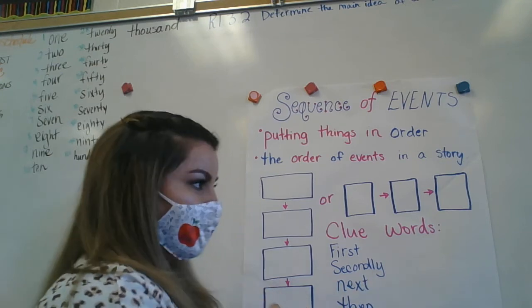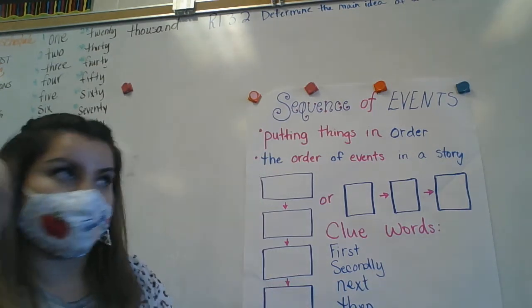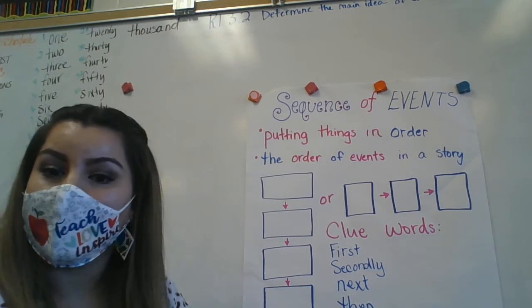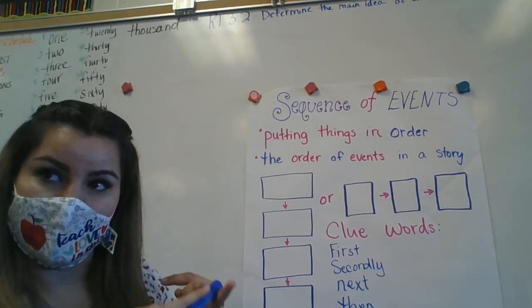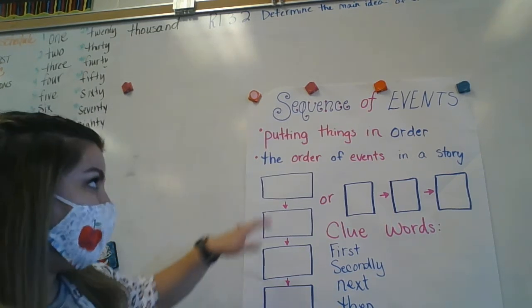Then, okay, so like Josiah was saying, in a story, there's a beginning. What comes next? A middle. A middle and an ending.